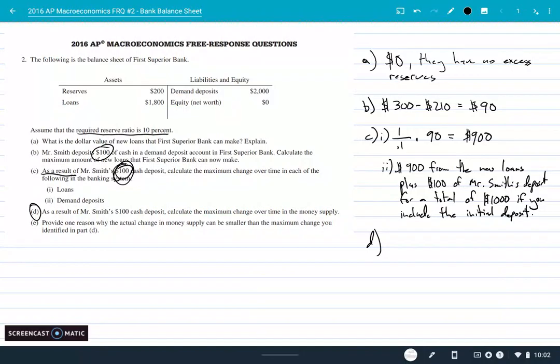Lastly, part D: as a result of Mr. Smith's $100 cash deposit, calculate the maximum change over time in the money supply. Well, this one's a little easier because this hundred dollars that he deposited was already part of the money supply. It was cash that he had. So the new growth is going to be that $900 that happens from all that lending process.